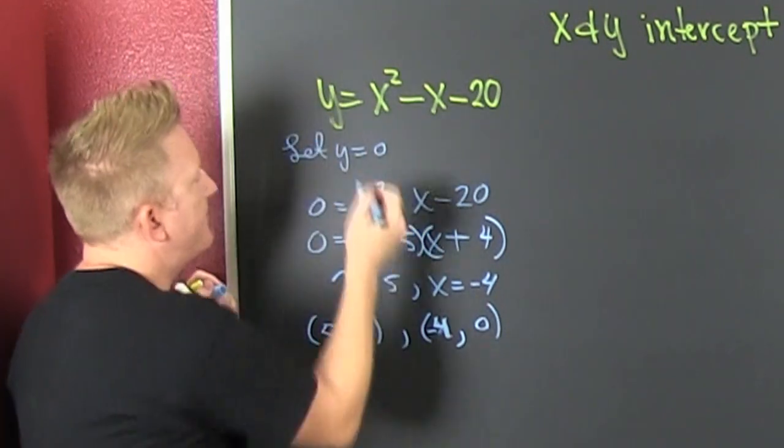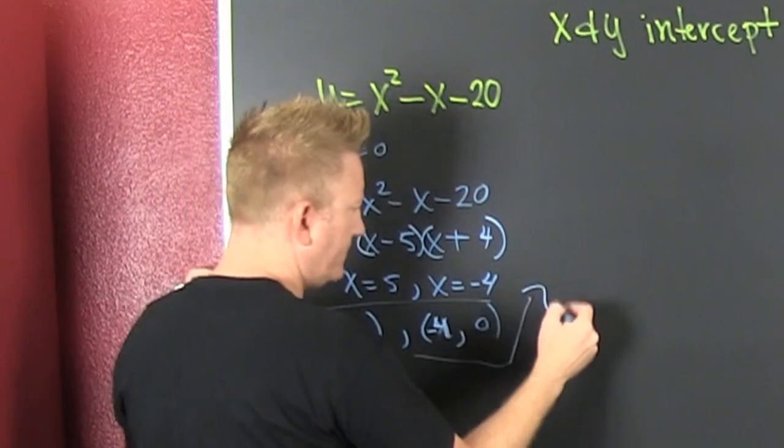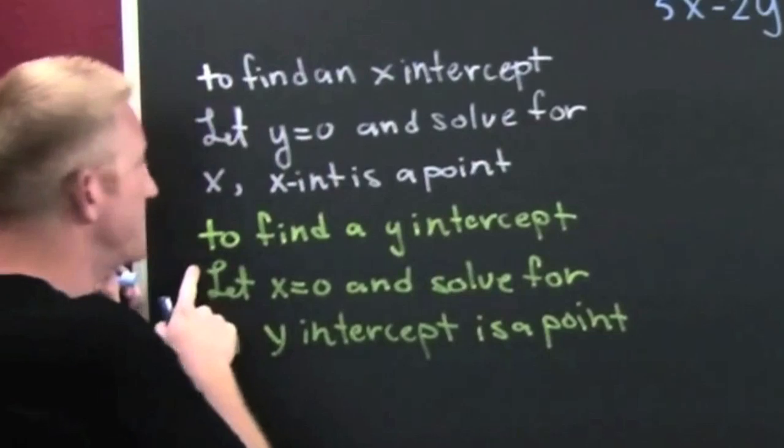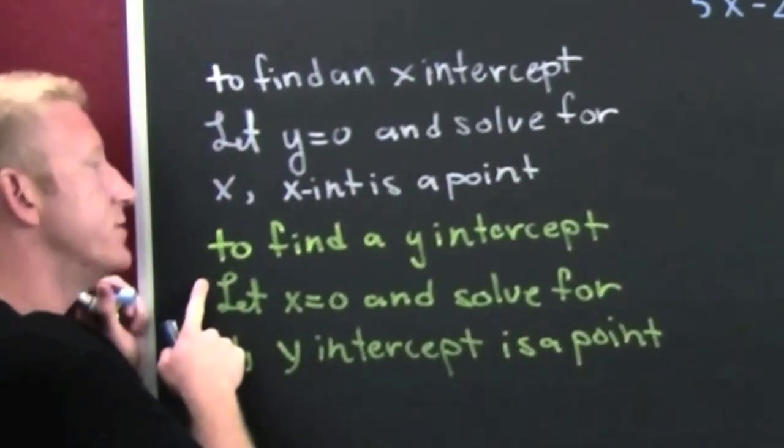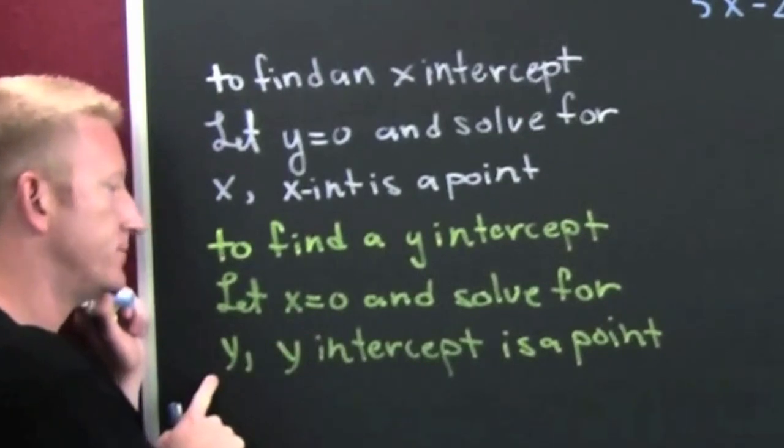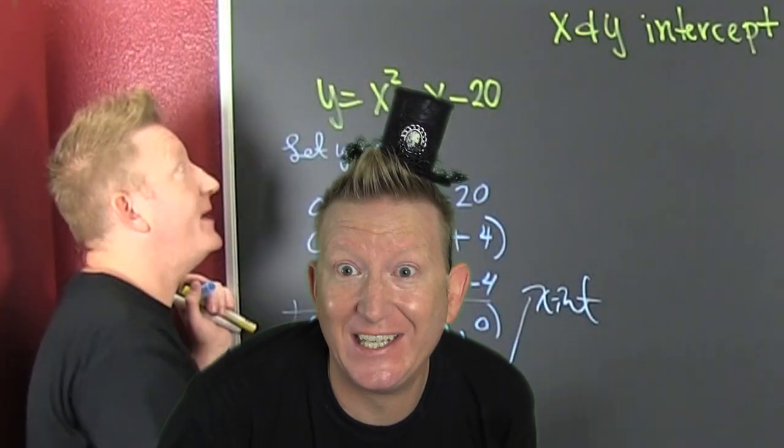So we found that x-intercepts when y is equal to 0. These are... Y! How you roll and you get a y-intercept. To find the y-intercept, you let x be 0 and you solve for y. And again, the y-intercept.